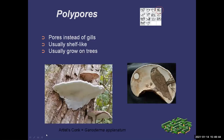We'll start by talking about polypore mushrooms. They don't have gills — they have pores. It doesn't show up well in pictures, but when you have one in hand there'll be all these little tiny holes. Most of them grow from trees and most of them are shelf-like. This is artist conch, and it's called that because artists will sometimes paint on them or use a wood-burning iron to produce beautiful works of art.